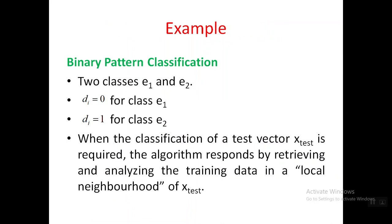Let us take an example: binary pattern classification. Binary means there are two things — zero and one — so two classifications: e1 and e2. For e1, the desired output is zero; for e2, the desired output is one. Now, what we need to do in this learning rule is classify a test vector x_test when it arrives.